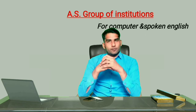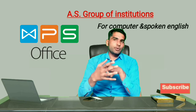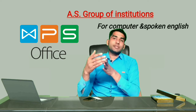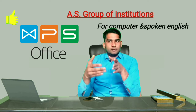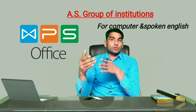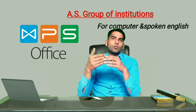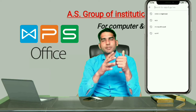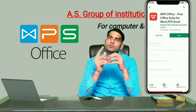At number one is WPS. This is one of the most popular applications available in the Google Play Store and can easily replace Microsoft Office. It has three basic components: WPS Writer, which works as Microsoft Word; WPS Presentation, which works as Microsoft PowerPoint; and WPS Spreadsheet, which works as MS Excel. You can also open and edit PDF files using this application. It is open source — simply open the Play Store, type WPS in the search box, and install it.